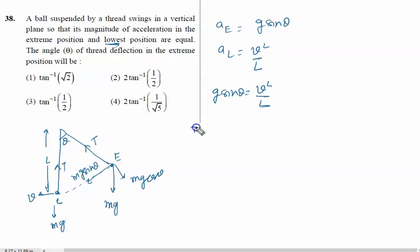Total energy at E must be equal to total energy at L. So at E it is extreme point, so kinetic energy is zero, and if I take E as the reference point, so potential energy also zero, so total energy is zero here.